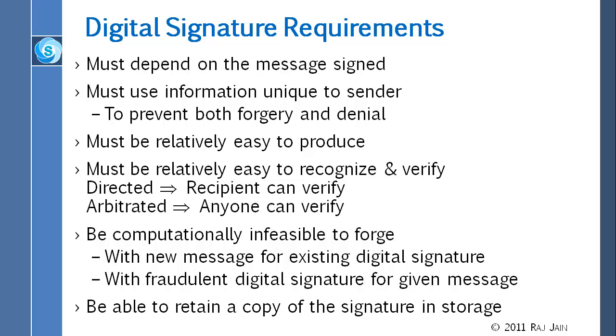It would be computationally infeasible to forge. So while it is easy to produce, but difficult to go the other way around. With new messages for existing digital signatures, we are not able to get new messages. We have repeated this for the hash. We have repeated this for MACs. And we are going to do the same thing for signatures. They are all one-way functions. They are all related. With fraudulent digital signatures for a given message, we cannot create signatures. Be able to retain a copy of the signature in storage. It's not like signature, you signed it, and then it disappears. So we should be able to store it, and 10 years from now, we should be able to say that this is what we signed 10 years ago.